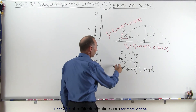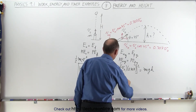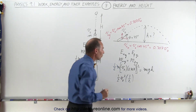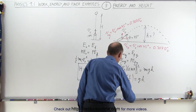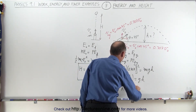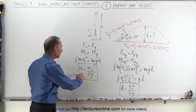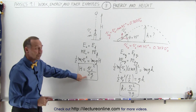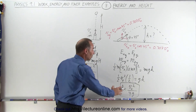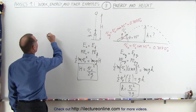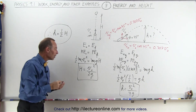Again the m's cancel out on both sides. When we square 0.707 we get one-half, so we have one-half times v-initial squared times one-half, which equals g times h. Solving for h gives h equals v-initial squared divided by 4g. Comparing the two results: H equals v-initial squared over 2g, and h equals v-initial squared over 4g. Dividing by twice as large a number means h is half the value of H.